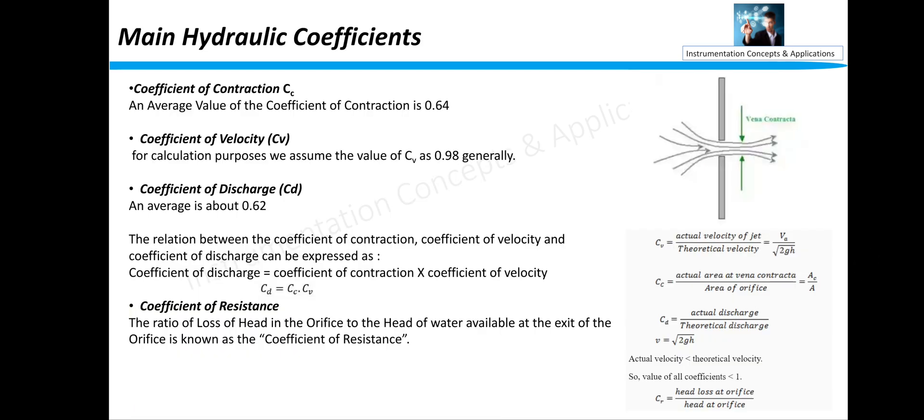Coming to some hydraulic part of the orifice plate, there are three, four types of coefficient actually. Coefficient of contraction: the average value of coefficient of contraction is 0.64. So these values are considered while designing a new orifice.